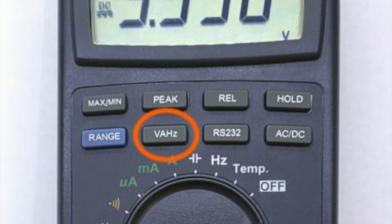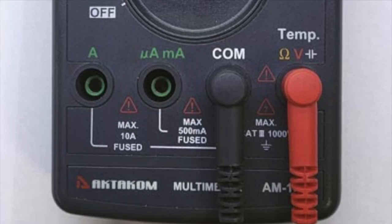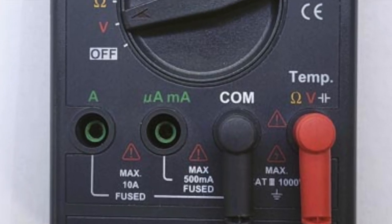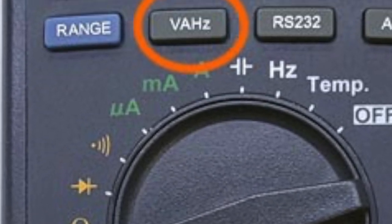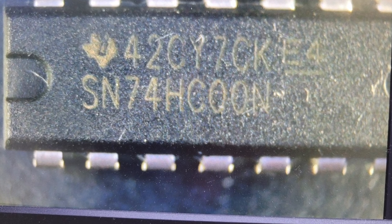The next interesting function of our professional AM1060 multimeter is the simultaneous measurement of two quantities, for example voltage and frequency. Let's conduct a study of the simplest generator using logical elements. Its circuit is shown in the figure and we use a chip like SN74HC00.